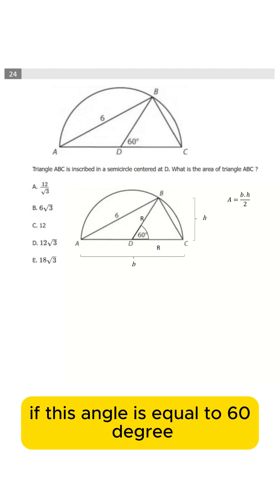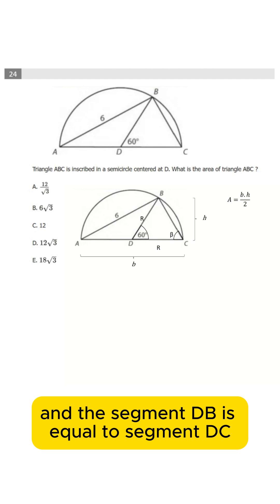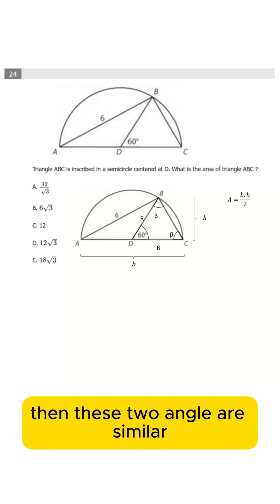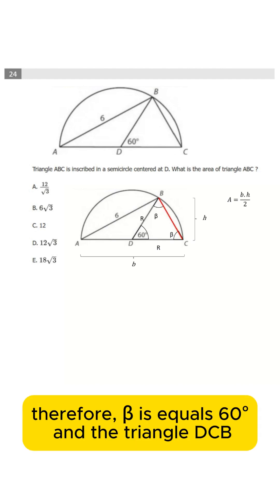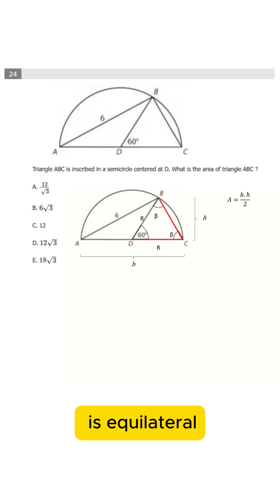If this angle equals 60 degrees and the segment DB equals segment DC, then these two angles are similar. Therefore, beta equals 60 and the triangle DCB is equilateral.